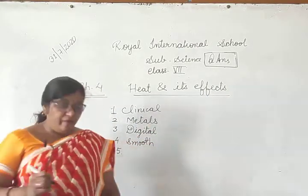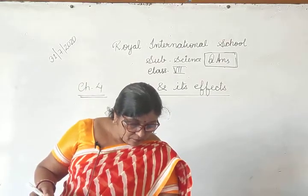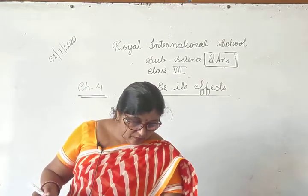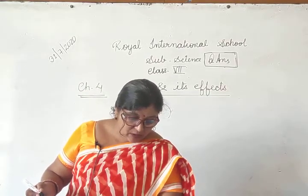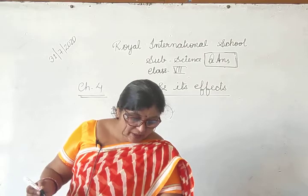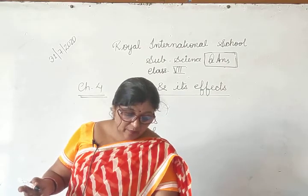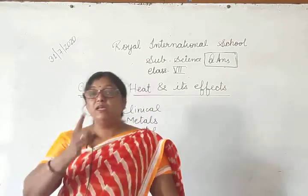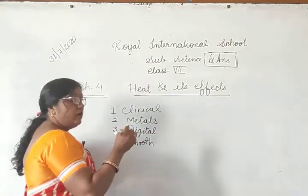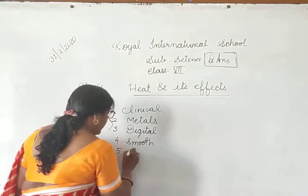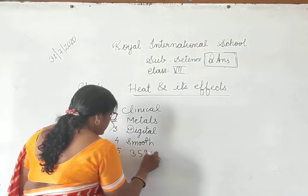Number five: the lower fixed point is 35 degree Celsius in a clinical thermometer — lower kitna hua? Thirty-five. Higher kitna hua? Forty-two. So the answer is thirty-five degree Celsius.